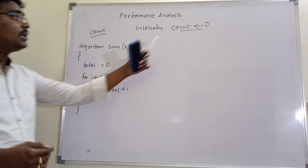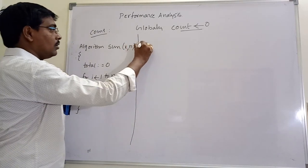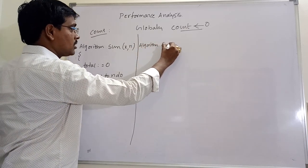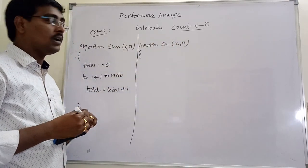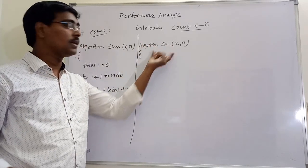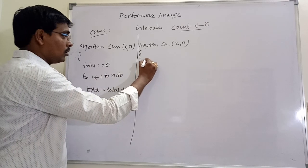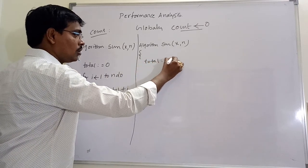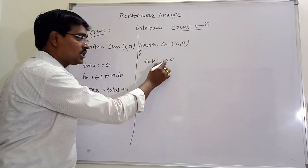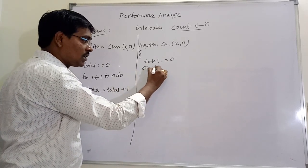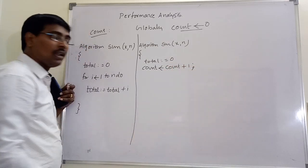For this program, initially assume a count variable as 0. The algorithm heading and opening and closing brackets are not valid statements. Next, total is equal to 0 — we are using a variable total with initial value 0. This is a valid step, and this step must be executed. So whenever a valid step is encountered, increment count value by 1.